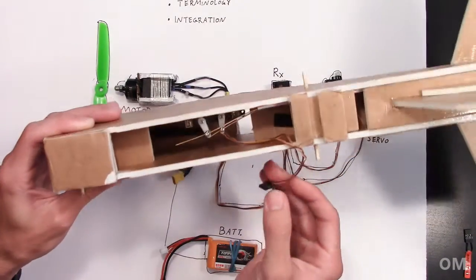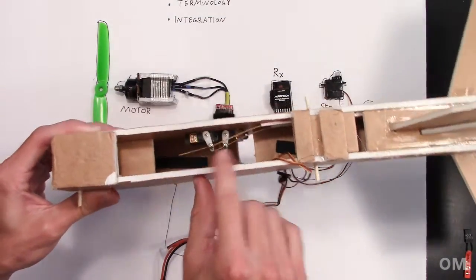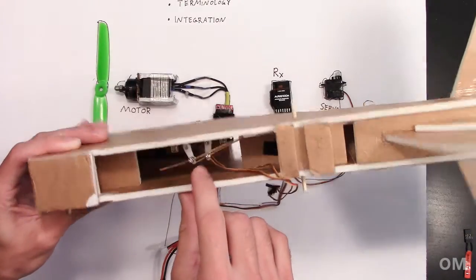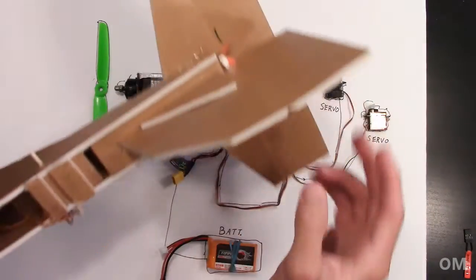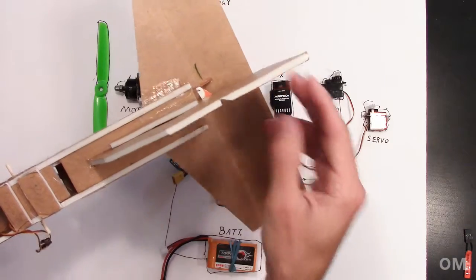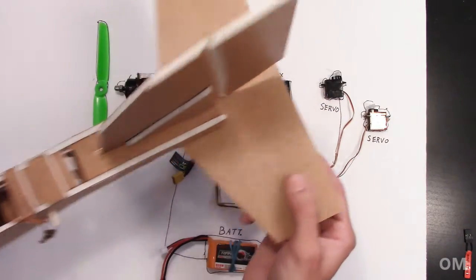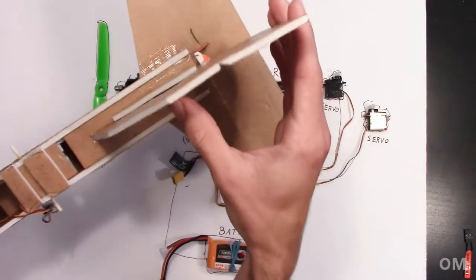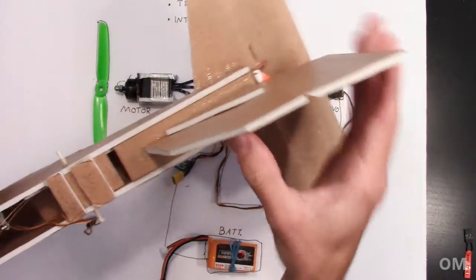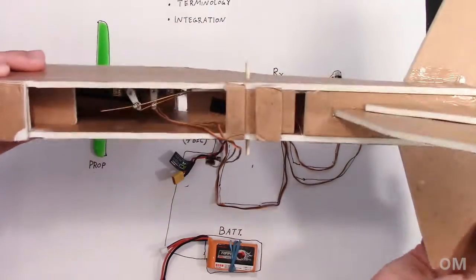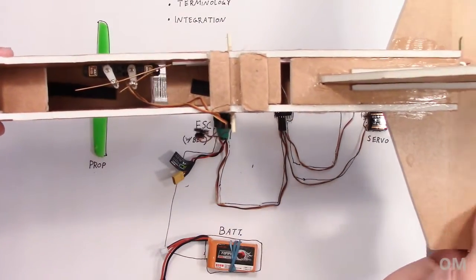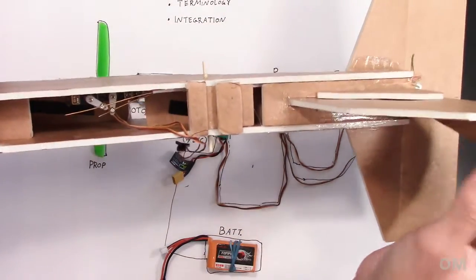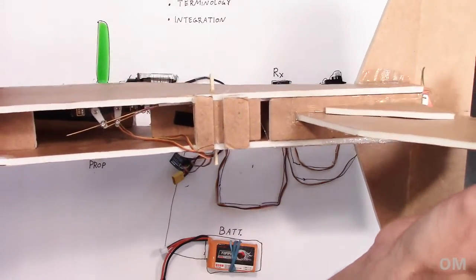But anyway, we can see in here we have two servos, which is all you're going to need for a basic airplane that's three channel. We'll talk about that in a second, what that means. But you're going to need a servo to control your elevator to make it go up and down, and a servo to control your rudder to make it go left and right. And you can see these servos in here move when I move the control surfaces like so.